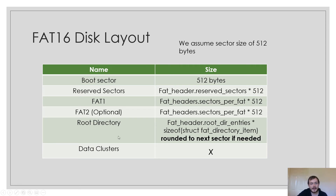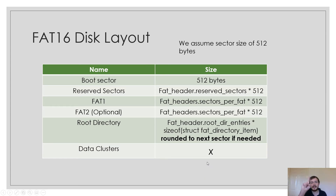After the root directory we have our data clusters — this is where all our data is stored. Our hello.txt text file with Hello World is stored in these data clusters. Remember each file uses at least one data cluster, and subdirectories are also stored in the data clusters. That's the entire structure of FAT16.